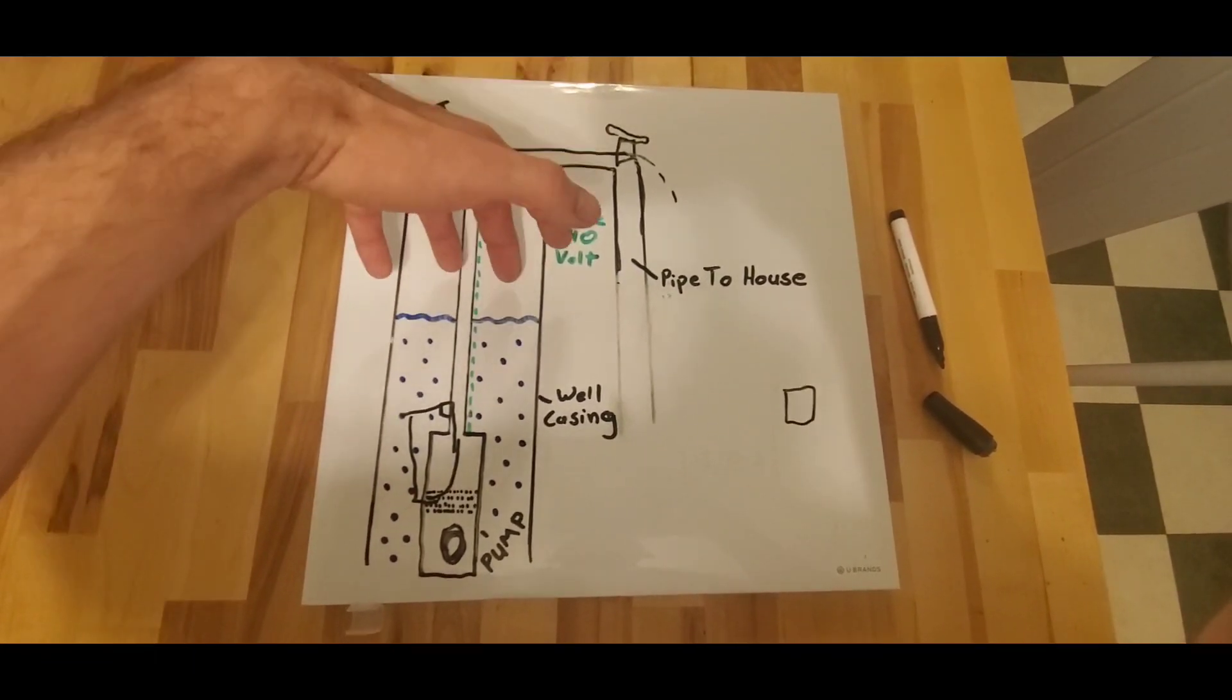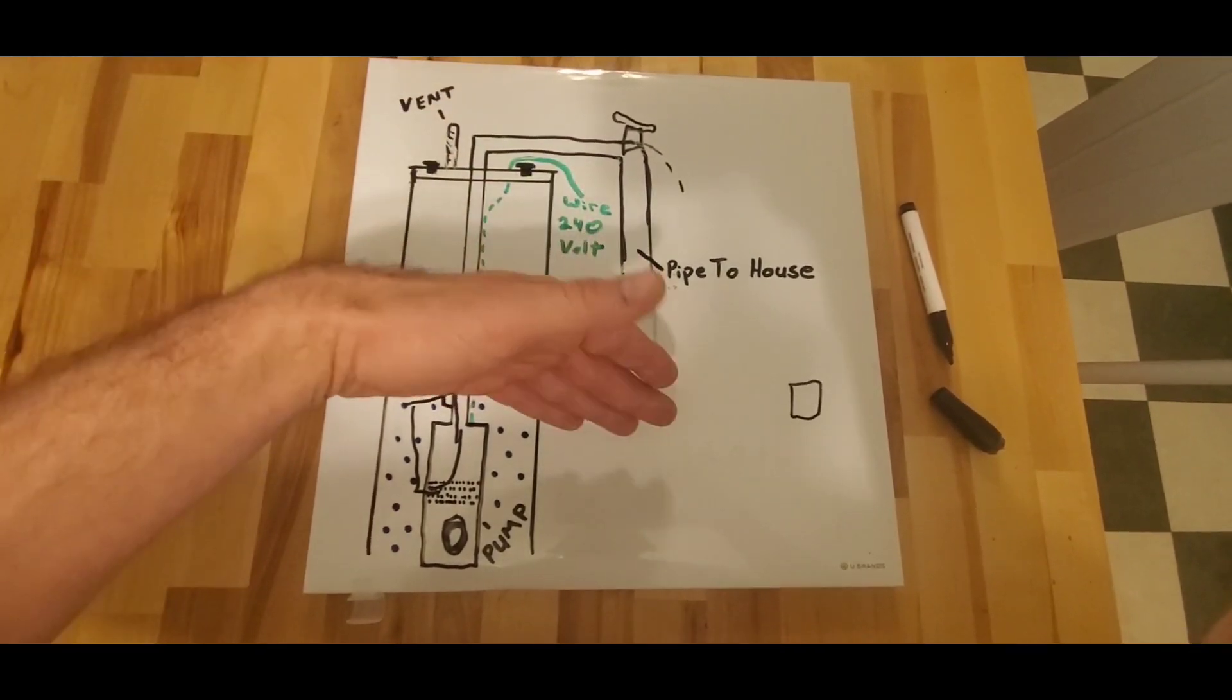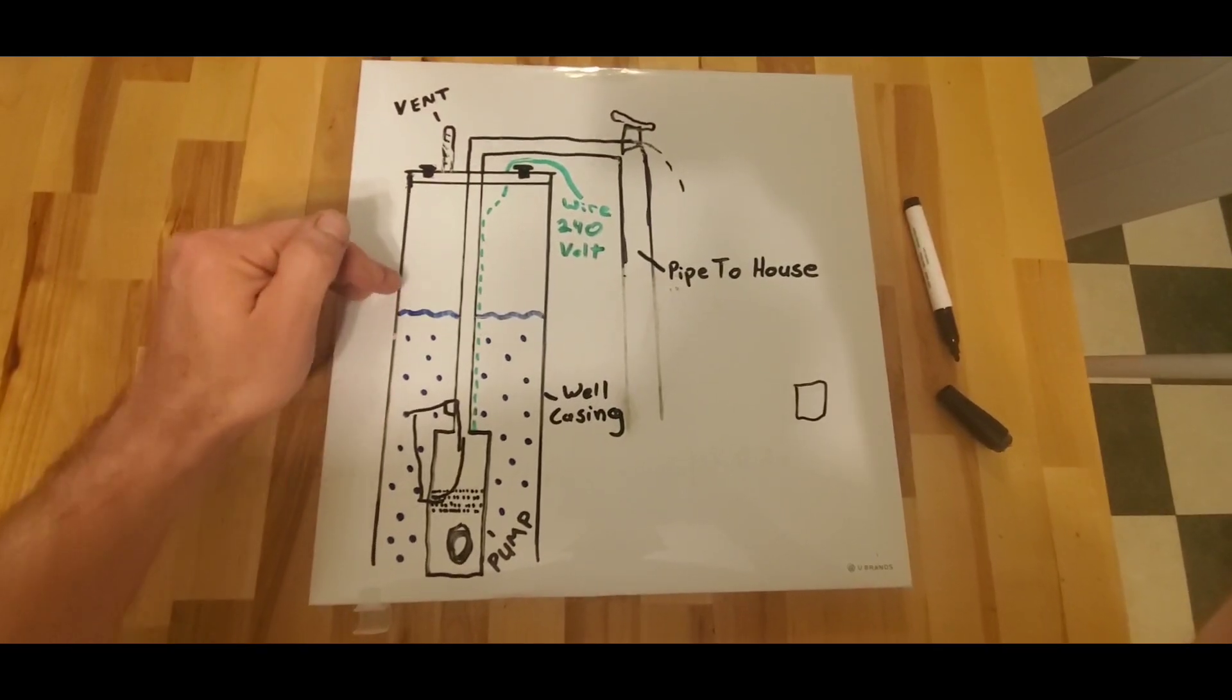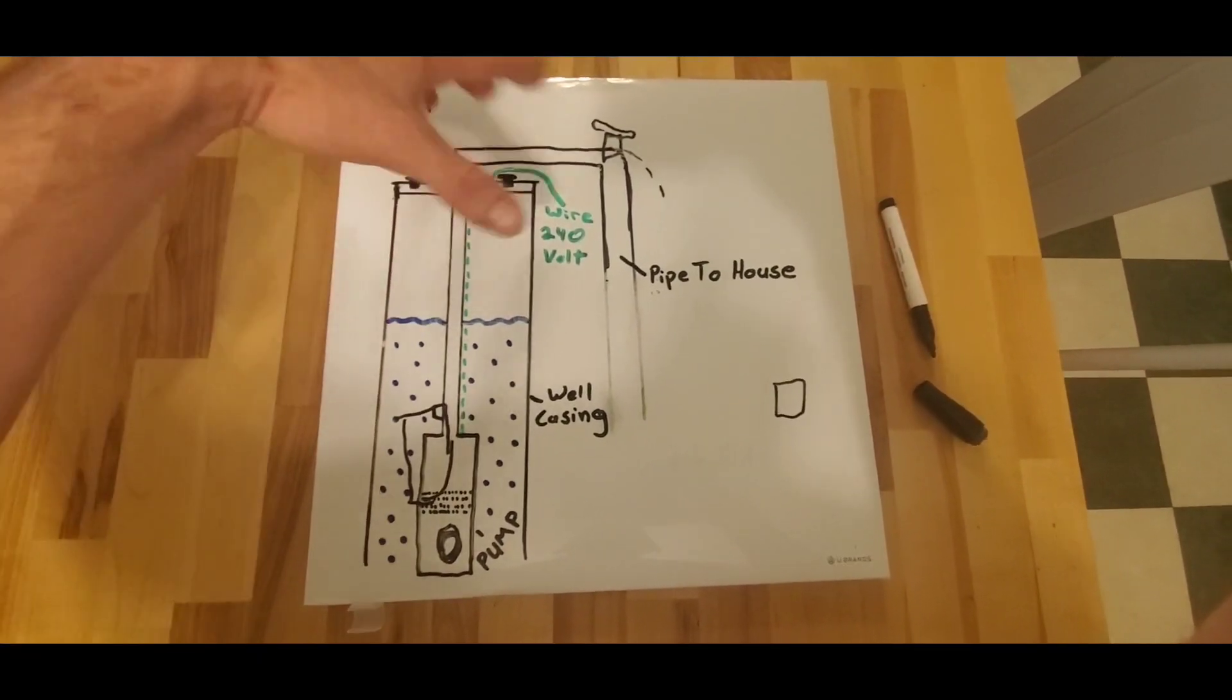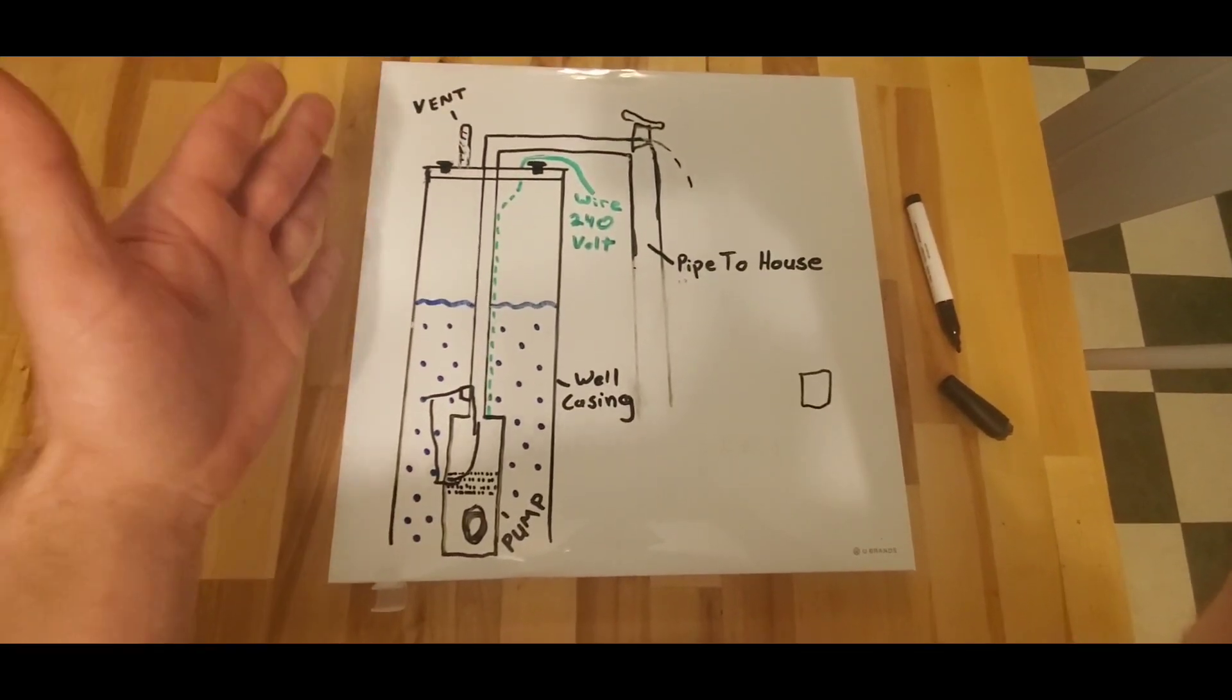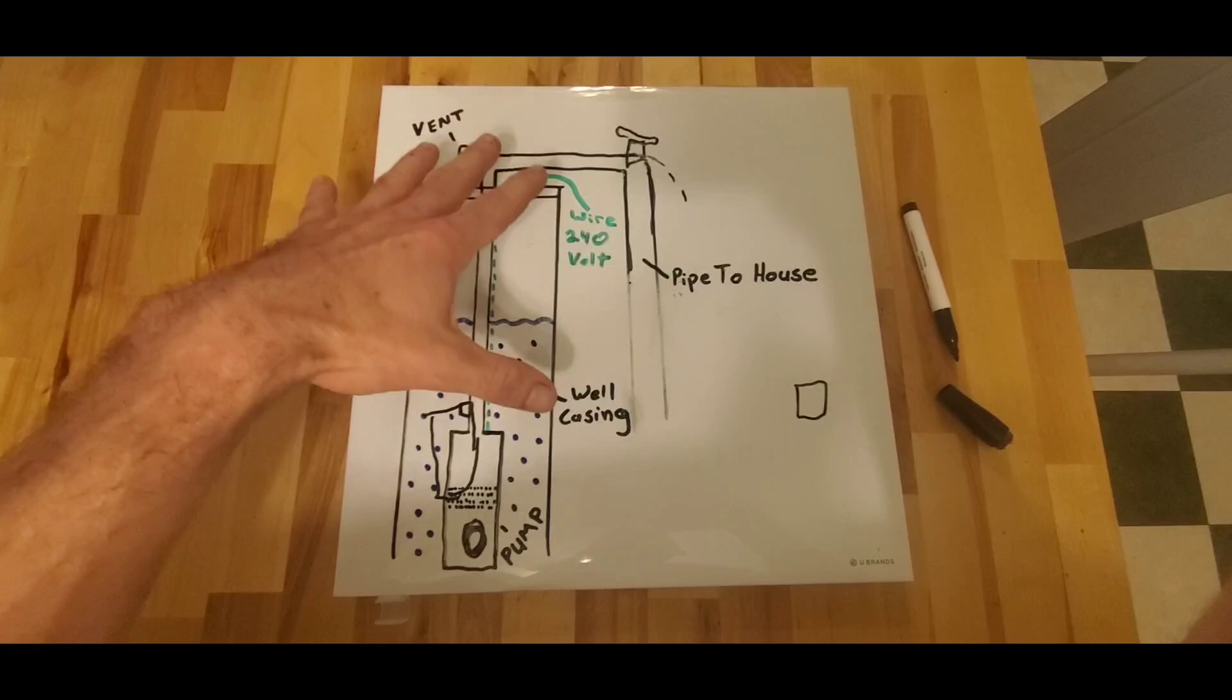So it's taking the air under your cover might be 35 degrees. It's pulling that 35 degree air and it's mixing it down here with 55 degree air. You stop using water in the house, the water level goes back up and it's pushing that air out of that vent, but it's trapped underneath your insulated cover.